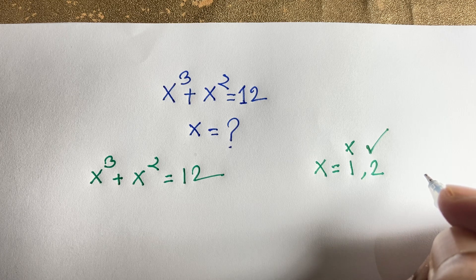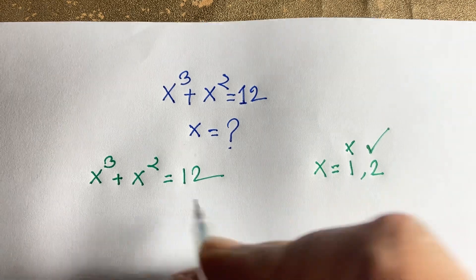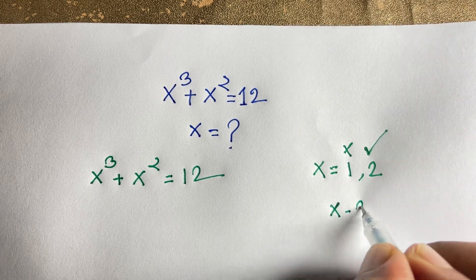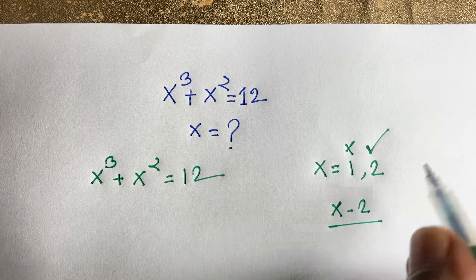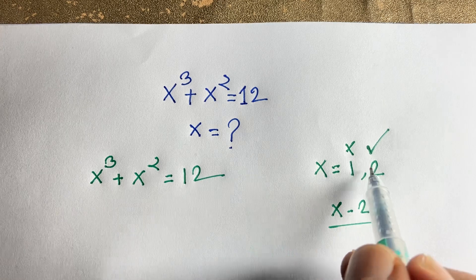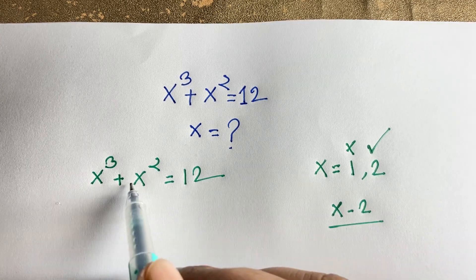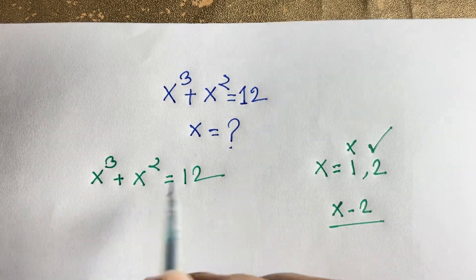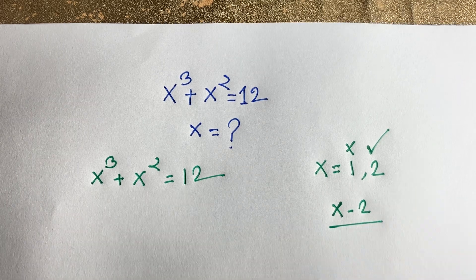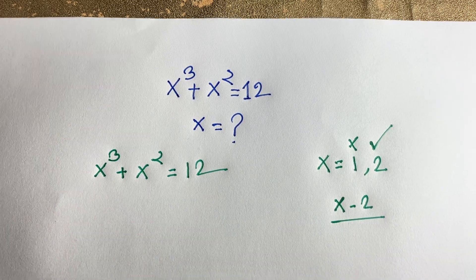But this is a cubic equation, and we are finding out the imaginary numbers as well. So one factor will be x minus 2, because when you put x equals 2 on the left hand side, the left hand side and right hand side are equal. So one factor is x minus 2.